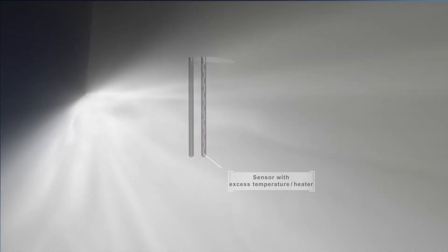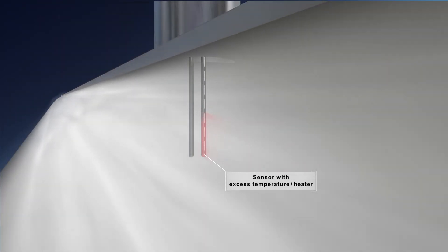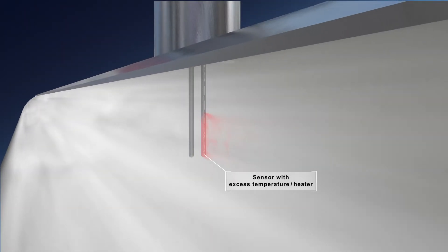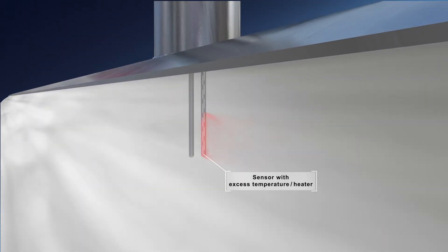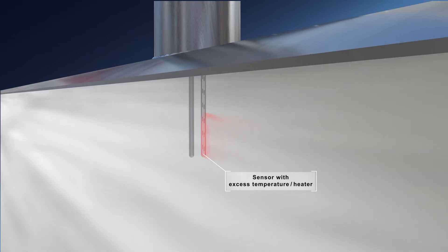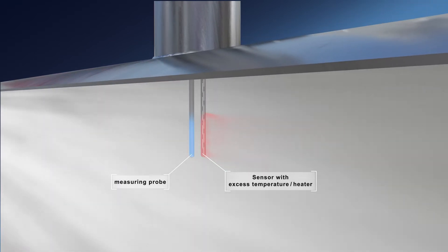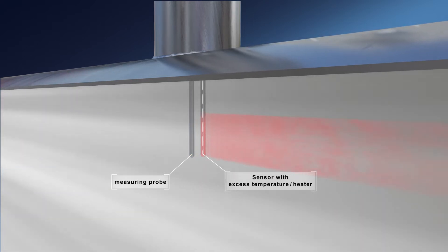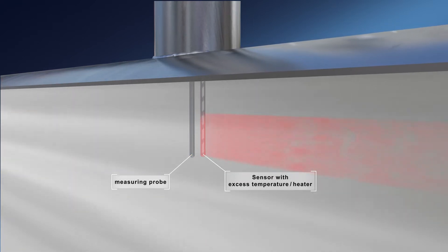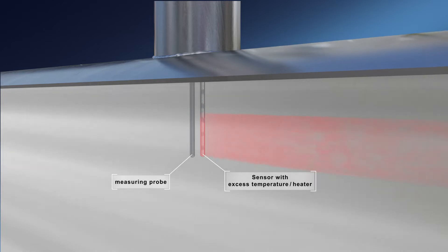With constant temperature anemometry, a part of the sensor works with a towards the ambient temperature constantly held excess temperature. To ensure constant excess temperature, the ambient temperature has to be measured as well. When the flow velocity increases, the current is raised until the heat loss caused by the flow is compensated. The tracked current is therefore a measure for gas mass flow.